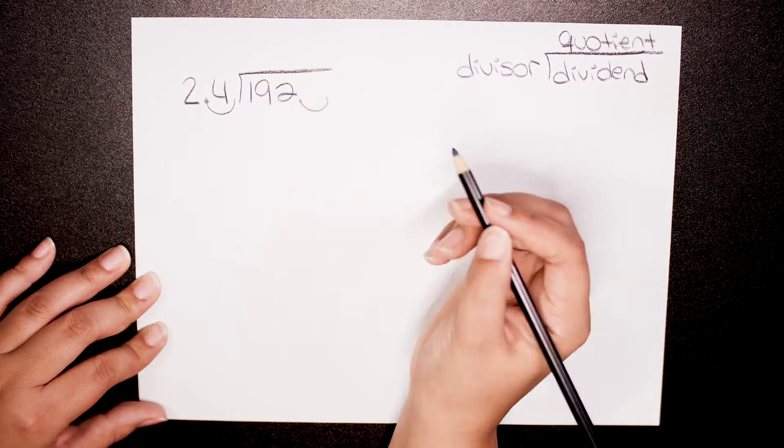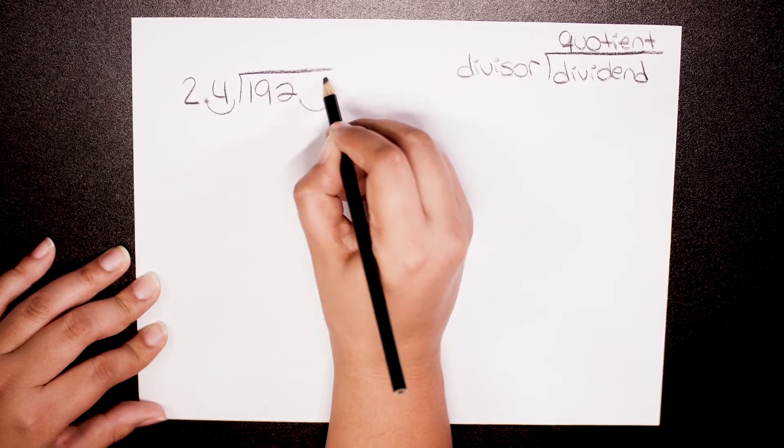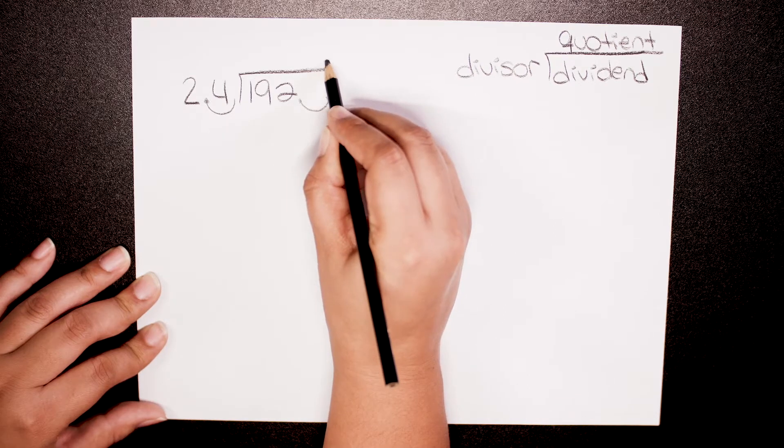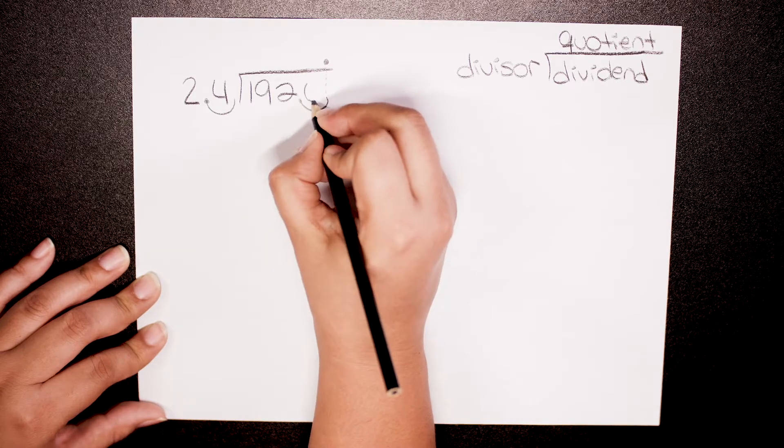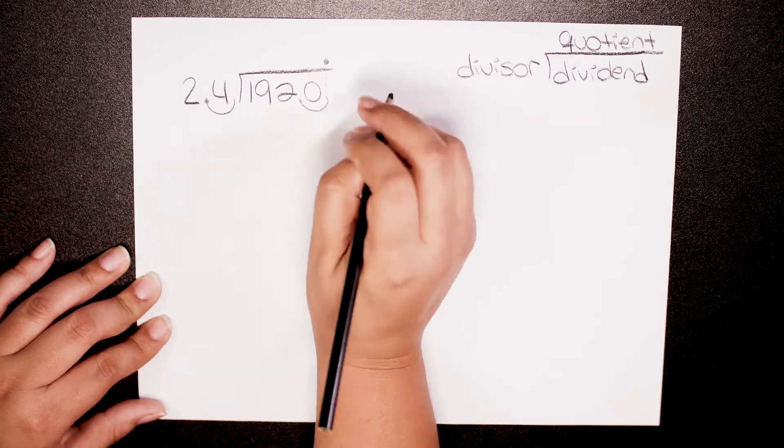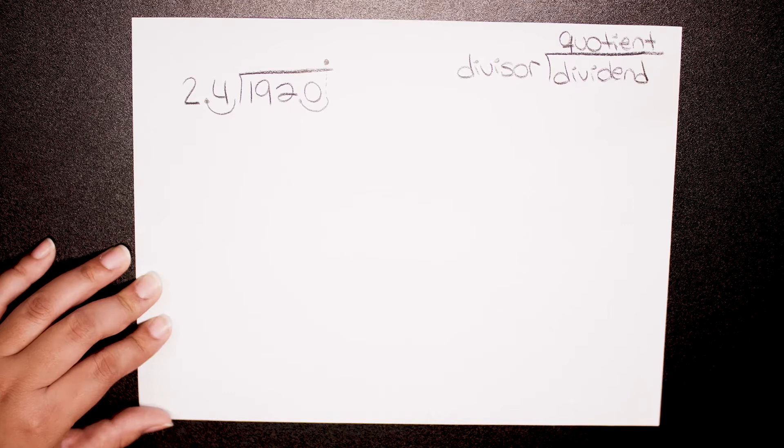And then you move your decimal point up to your quotient right here. Don't forget that in this empty space you should add a zero. So you start - as you can see it's a two-digit number, so you come here and you do your trial and error.